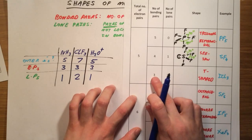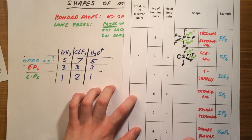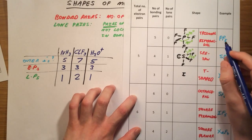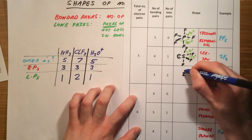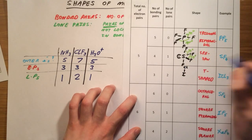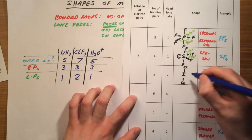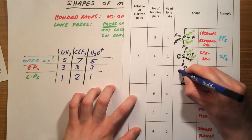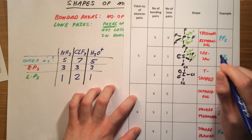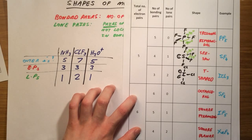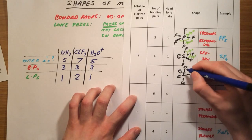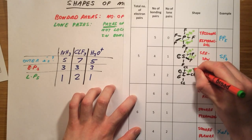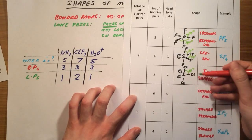With 3 bonded pairs and 2 lone pairs, we get a T-shaped molecule. In this case we have a central iodine with chlorines at the top and bottom, a chlorine at the side, and two lone pairs of electrons. These lone pairs reduce the bond angles, giving roughly 88 degrees, and you can see it looks almost like a T-shape.